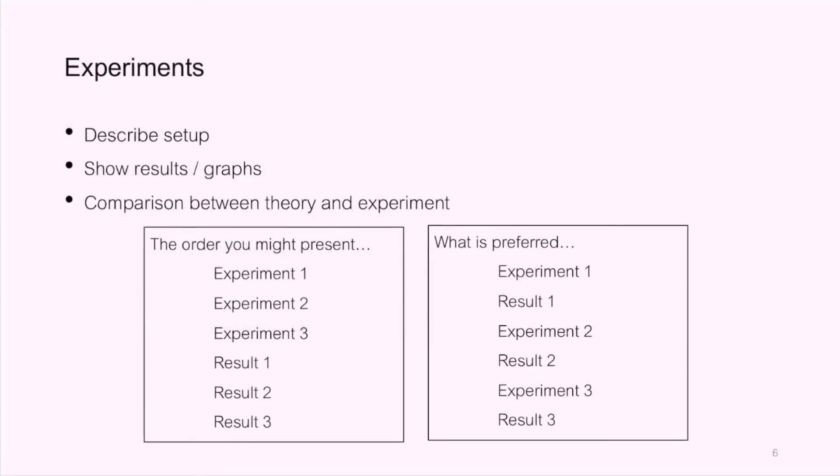For experiments, describe your setup and show the results or graphs that you have. And for comparison between theory and experiment, you might think of bombarding the audience with a series of experiment 1, 2, 3, followed by the result 1, 2 and 3. However, by the time you get to result 3, the audience might have forgotten the detail of experiment 3. Keeping experiment and corresponding results together helps the audience digest your work.